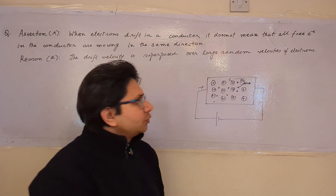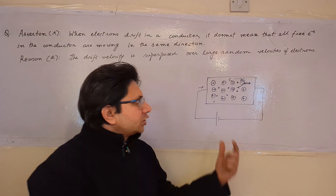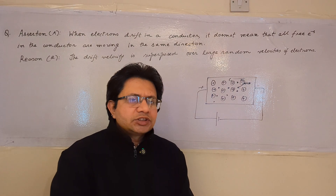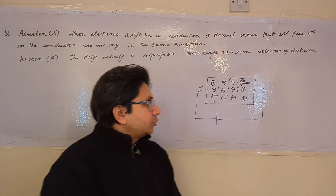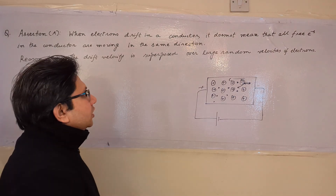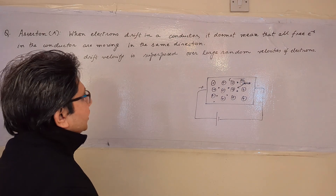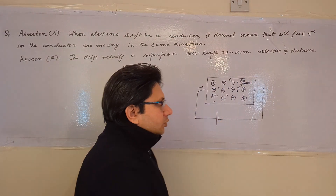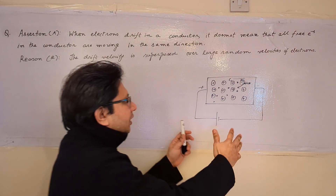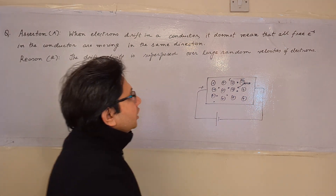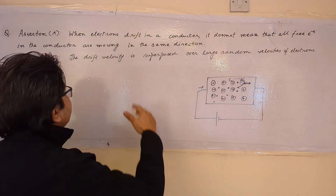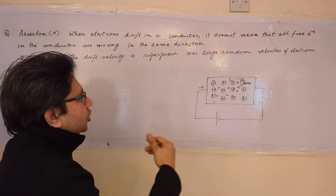In actual fact the electrons change direction, but for the totality we use superposition and assume a single direction. So the reason is also correct. Both assertion and reason are correct, and the reason is the correct explanation of the assertion. In this assertion-reasoning based problem, when drift current is produced by applying an electric field, it does not mean all free electrons move in one direction.